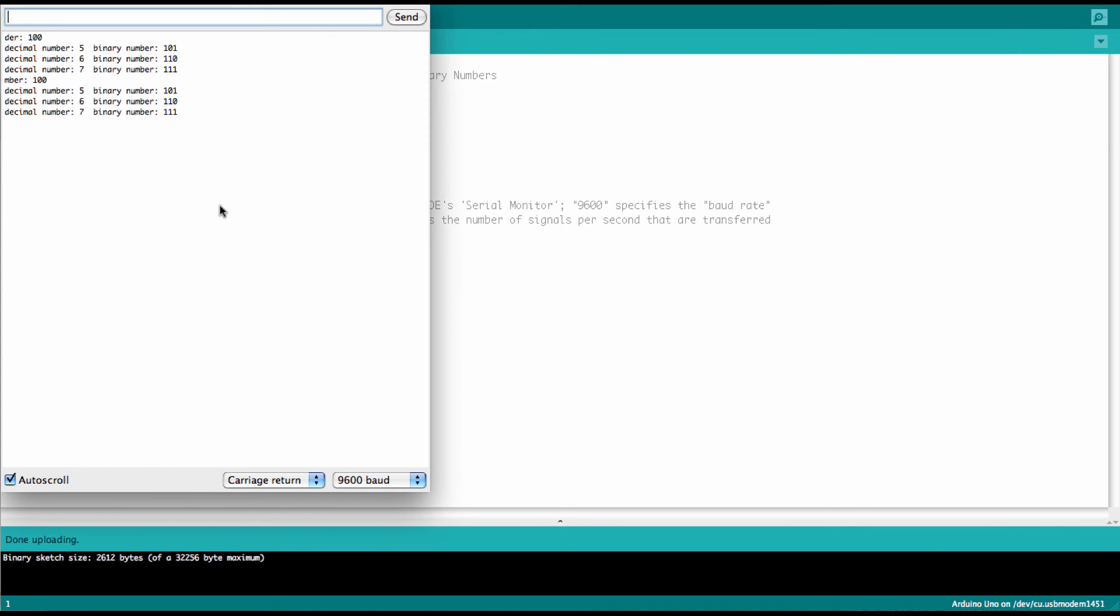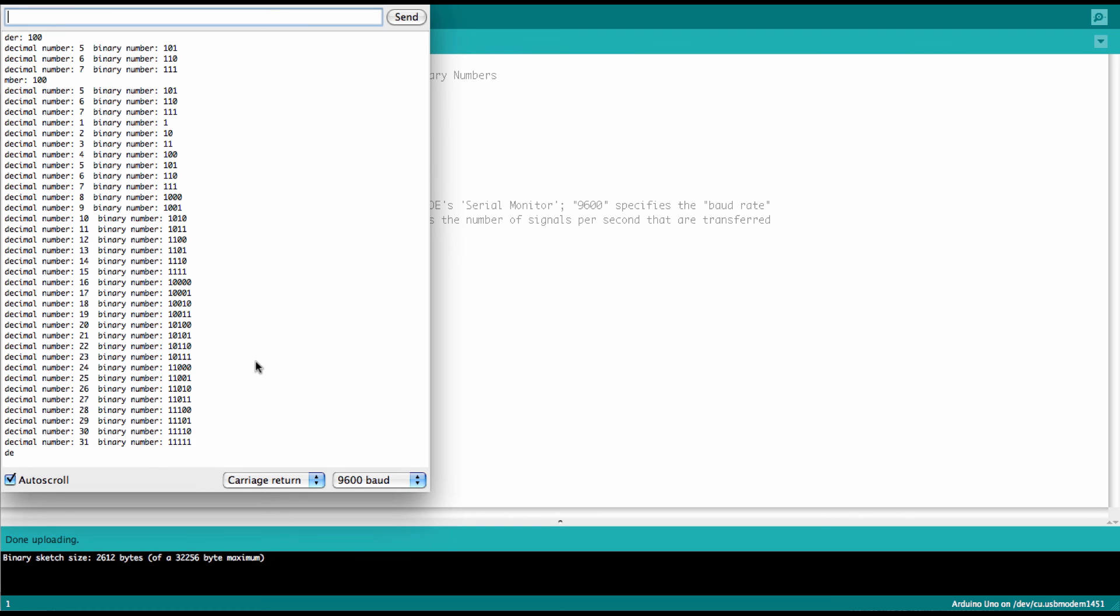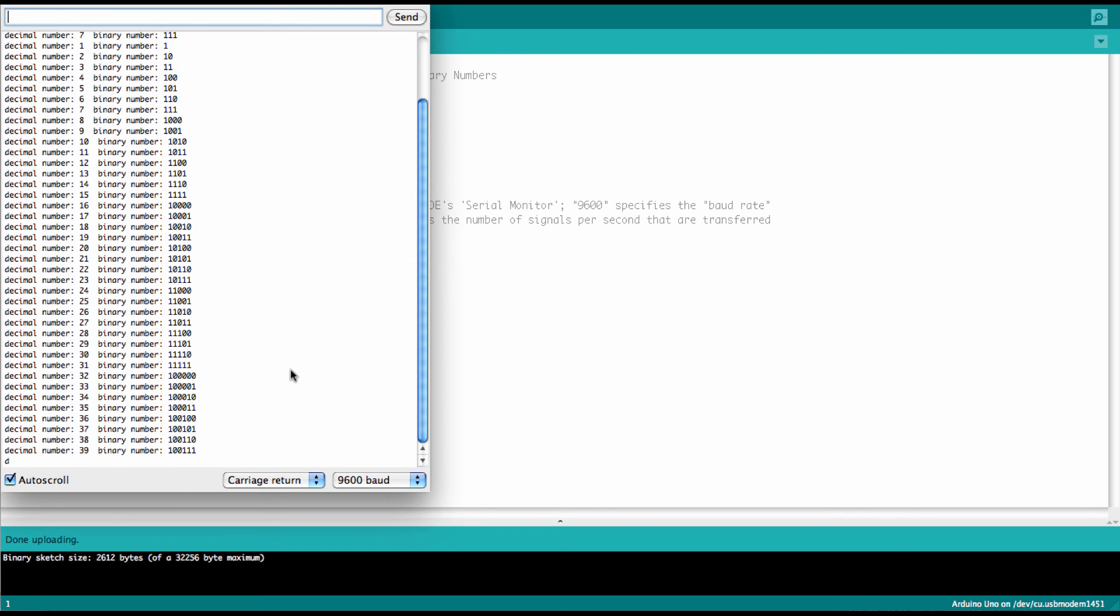And start the serial monitor. And so you see here, it started here. 1, 1, 2, 1, 0, 3, 1, 1, and so forth. And now let's see what happens as these numbers get bigger.